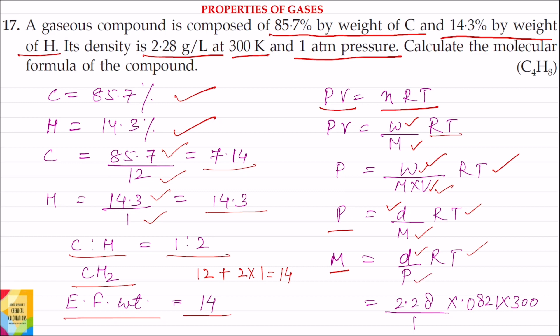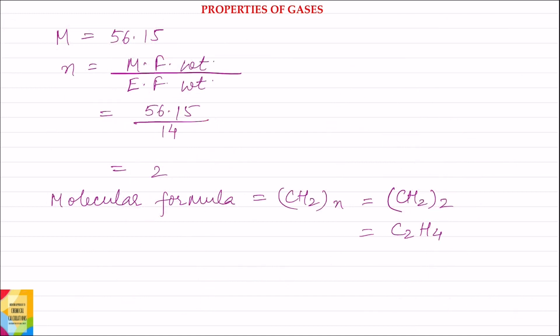Value of density is given in the question, that is 2.28 grams per liter, into R, that is 0.821, into temperature, which is given as 300 Kelvin, divided by pressure, which is 1 atmosphere. Solving the equation, the value for molecular weight is equal to 56.15.